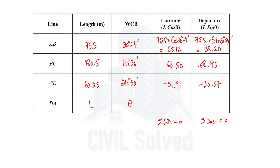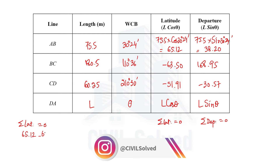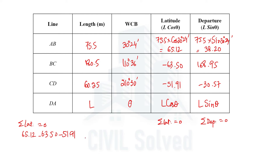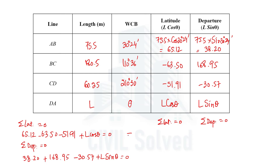The latitude for DA will simply be L·cos(θ) and departure will be L·sin(θ). Now using the two equations — summation of latitudes equals zero and summation of departures equals zero — we get: 65.12 − 63.50 − 51.91 + L·cos(θ) = 0 for latitudes, and 38.20 + 168.95 − 30.57 + L·sin(θ) = 0 for departures.